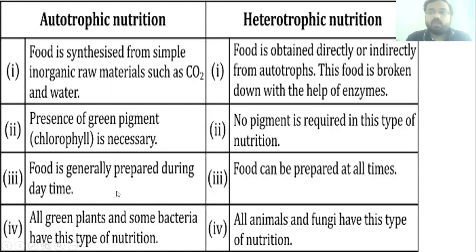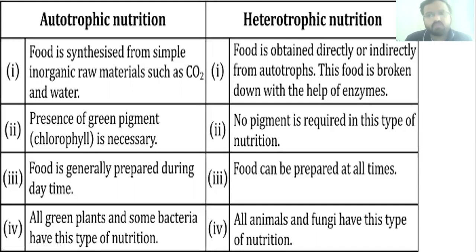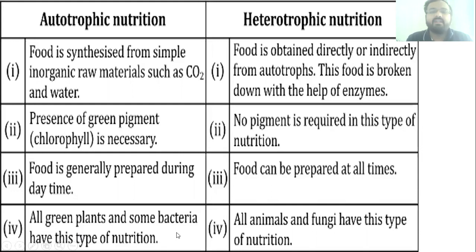In autotrophic nutrition, food is generally prepared during daytime because photosynthesis requires sunlight. In heterotrophic nutrition, food can be obtained at any time since heterotrophs depend on other plants and animals. All green plants and some bacteria follow autotrophic nutrition, while all animals and fungi follow heterotrophic mode of nutrition.